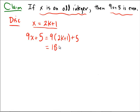Using a little bit of distributive property here, we get 18k plus 9 plus 5. Then we get 18k plus 14.